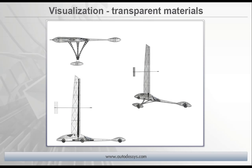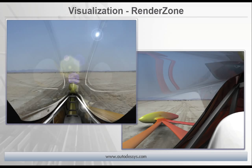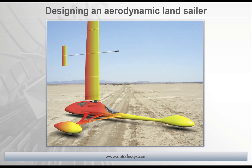You can use transparent materials to visualize your design in a more abstract way, sort of like an x-ray image. Here we have a RenderZone rendering as if you're actually sitting inside the Land Sailor, and you can add special effects such as lens flares. So with that, let's get started — I'll show you step-by-step how to build your own stylish high-speed Land Sailor. All the conceptual sketching, 3D modeling, rendering, and visualization you see here was all created solely in Bonsai 3D.